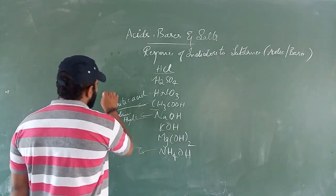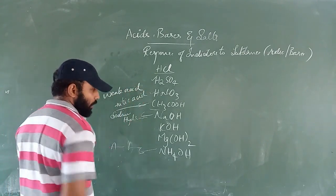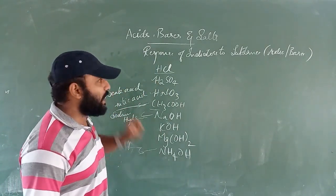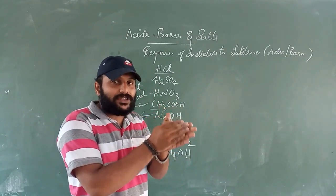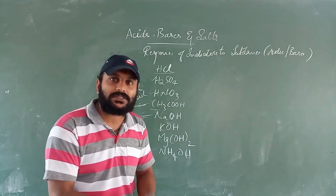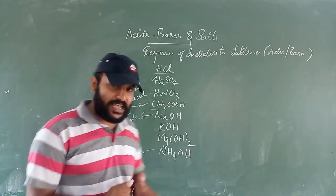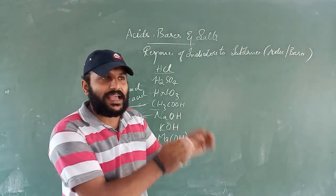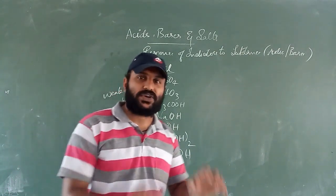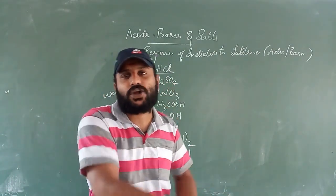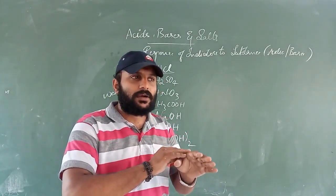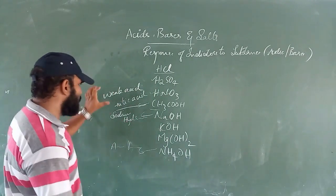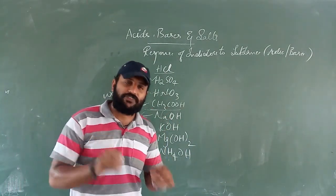CH₃COOH, acetic acid, is a weak acid. There are two types of acids: strong acids and weak acids. A strong acid is one that completely dissociates its H⁺ ions in aqueous solution. A weak acid is one whose ions are not completely dissociated in aqueous solution.